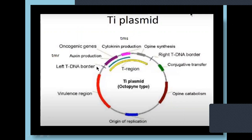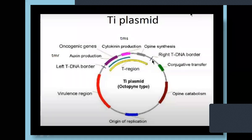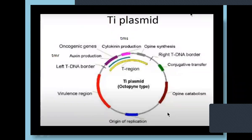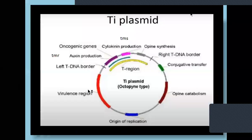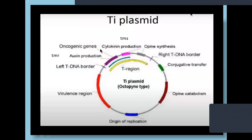These two borders also protect the T-DNA. When you go for transgenic plants, you will remove the onc genes — the genes responsible for causing the crown gall. But you must not damage the 25 base pair direct repeat sequences on either side. If you damage the left border and right border, transformation will not happen and transgenic plants will not form. So these two act like a pass and protect the T-DNA.